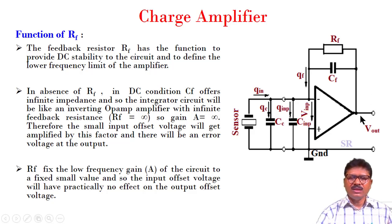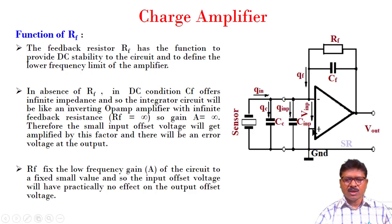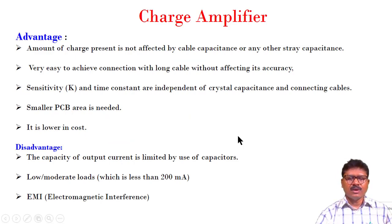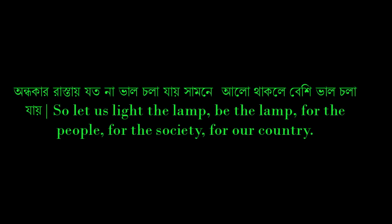In summary, the charge amplifier uses an op-amp with a feedback capacitance CF and the sensor at the input. Cable capacitance and input capacitance are also present. Using KCL node calculation, we ultimately obtained the output voltage as a function of QIN and CF only — this is the charge amplifier. Thank you.